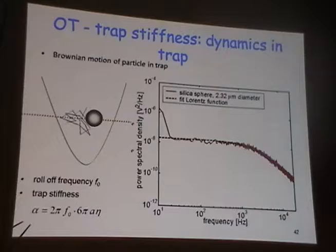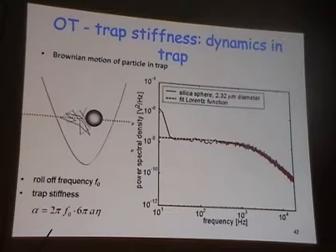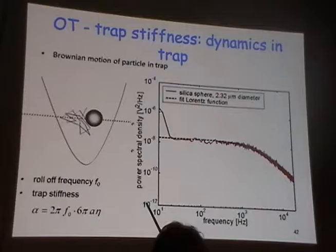The stiffness of the trap is determined by this roll-off frequency times the size of the particle times the viscosity of the medium in which we are working. With that we can say whether the trap is weak or strong, whether the stiffness is large or small — but the roll-off of this typical Lorentzian function will always produce this type of behavior.